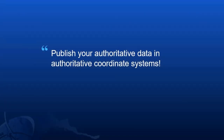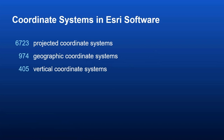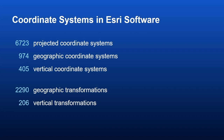Earlier this year, a couple of colleagues and I were discussing coordinate systems with a colleague from Esri Australia, and the phrase came up: publish your authoritative data in authoritative coordinate systems. We were explicitly talking about Web Mercator and why this really matters. Right now in Esri software using the Projection Engine, there are over 6,700 projected coordinate systems, over 970 geographic coordinate systems, just over 400 vertical coordinate systems, just under 2,300 geographic or datum transformations, and just over 200 vertical transformations.